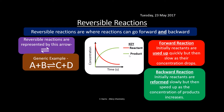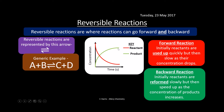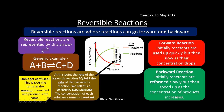Looking at it in terms of products: initially the concentration of products increases — the amount of product being produced is really quick initially and then slows as the concentration of reactants decreases. At the point where both curves start to flatten out, the rate of the forward reaction equals the rate of the backward reaction, and we call this a dynamic equilibrium.